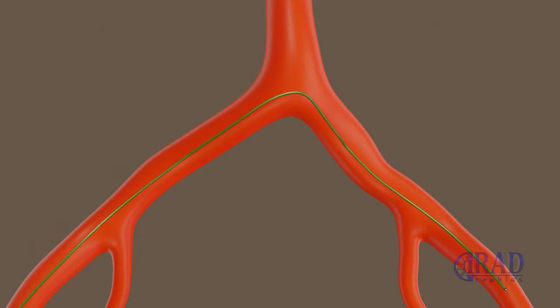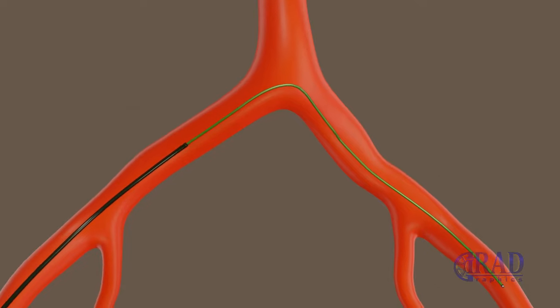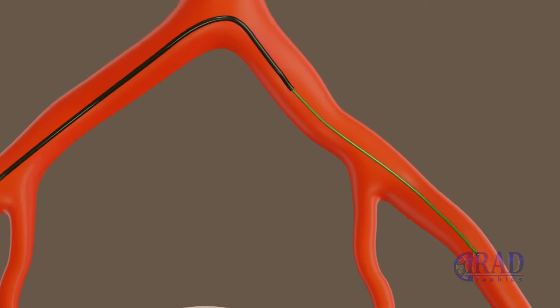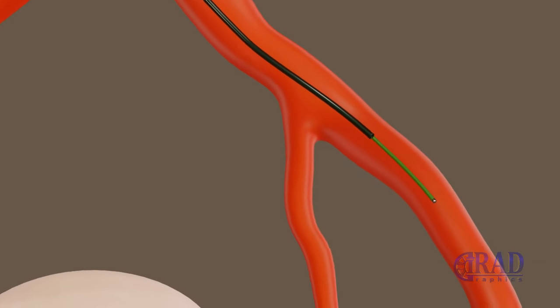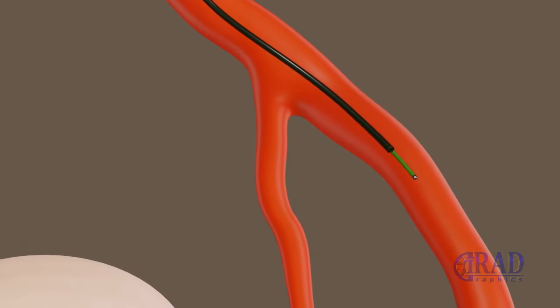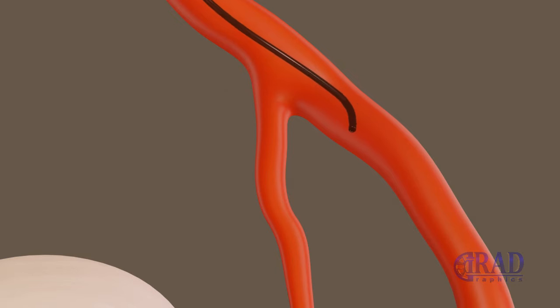Subsequently, the curved catheter is exchanged for an angled catheter, which is advanced over the wire to the contralateral side. Then, the wire is removed and the tip of the catheter is pulled until it is placed at the origin of the internal iliac artery.